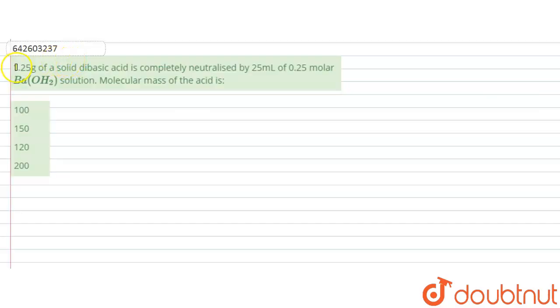The question is: 1.25 gram of solid dibasic acid is completely neutralized by 25 ml of 0.25 molar barium hydroxide solution. So the molecular mass of the acid is? In the question it is given that a solid dibasic acid which is completely neutralized by barium hydroxide, which is a base.